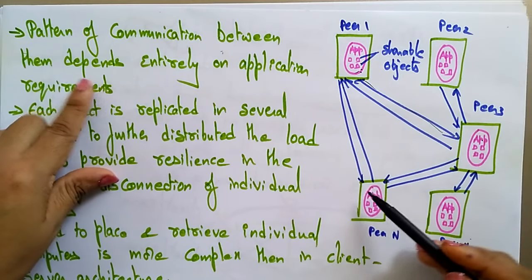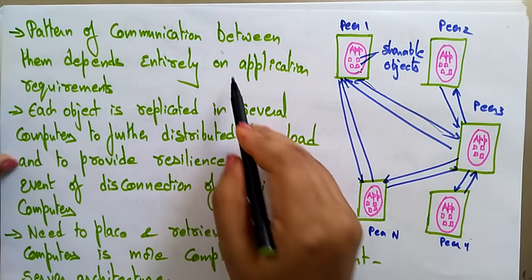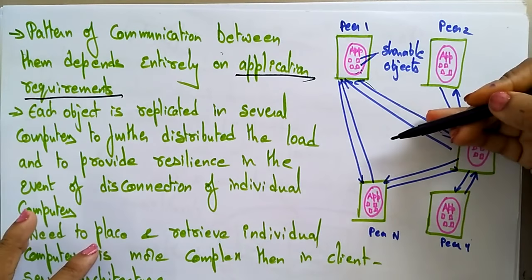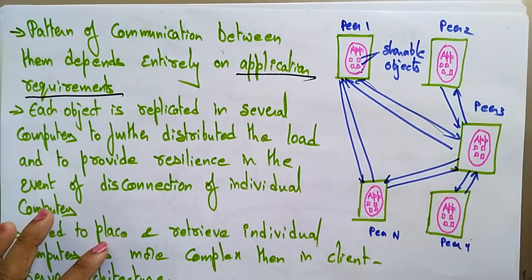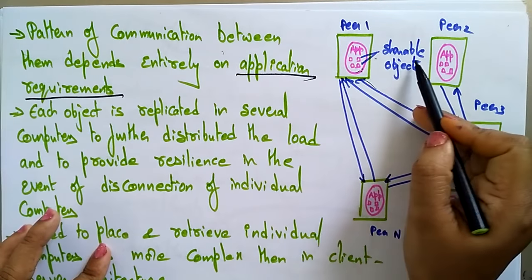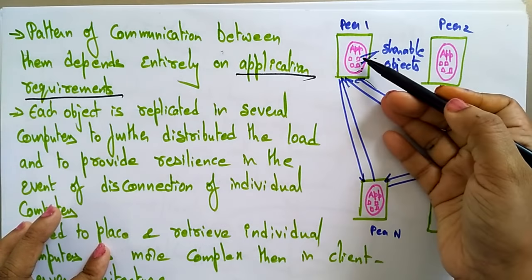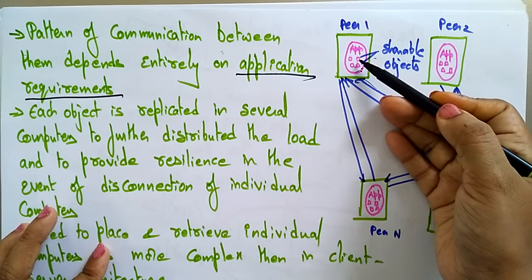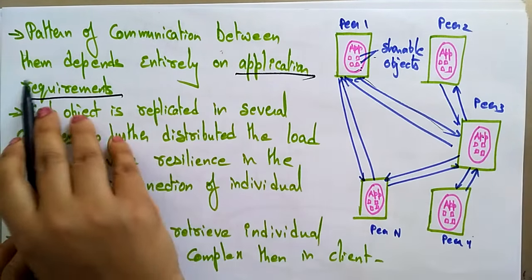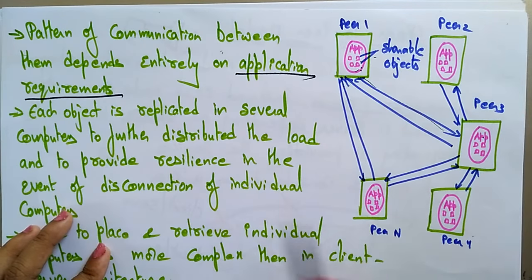The pattern of communication between the systems depends entirely on application requirements. You may observe that some systems are not connected to each other — that is because they don't need each other's objects. So the pattern of communication between them depends entirely on application requirements.